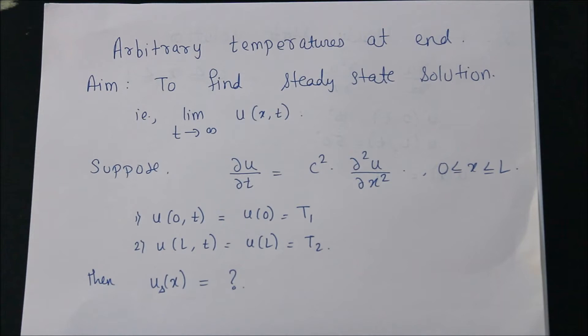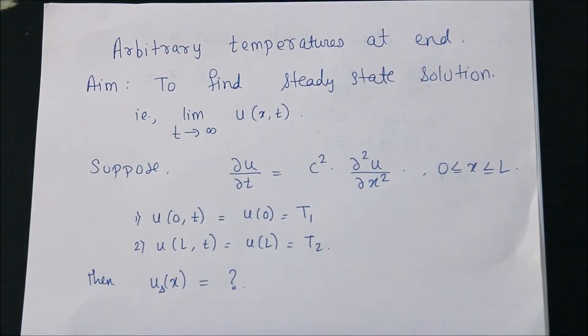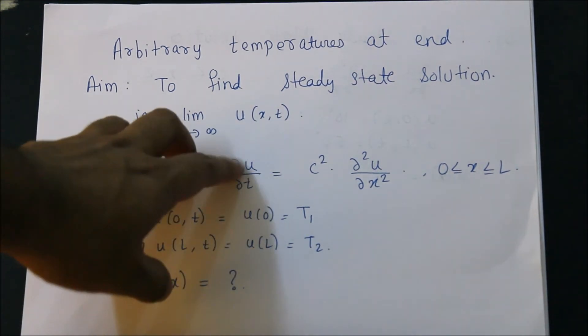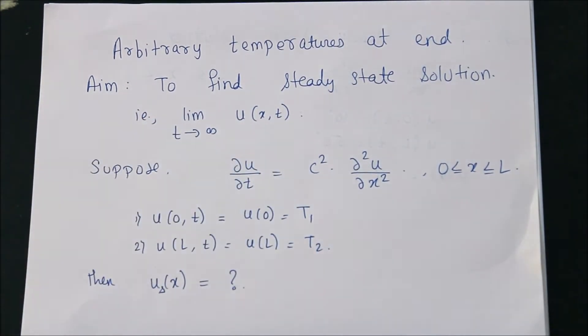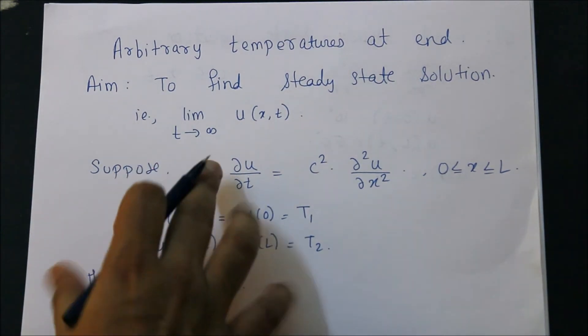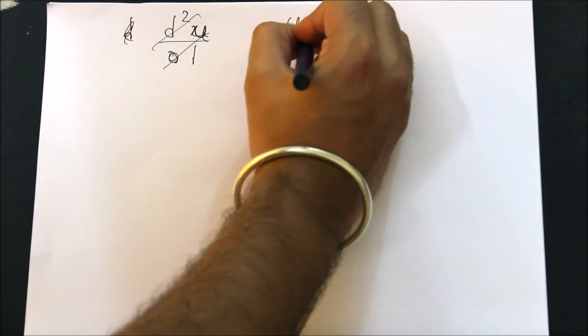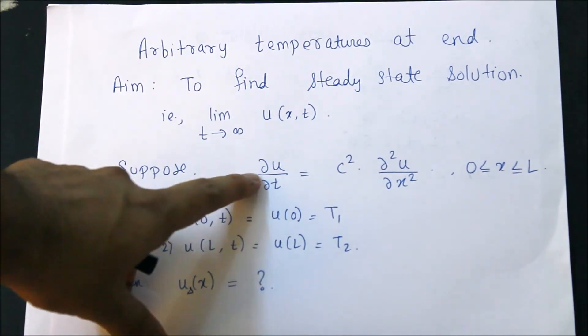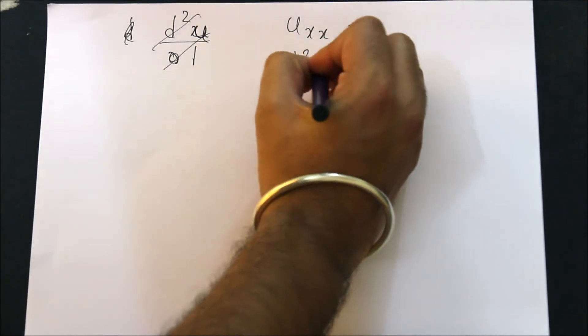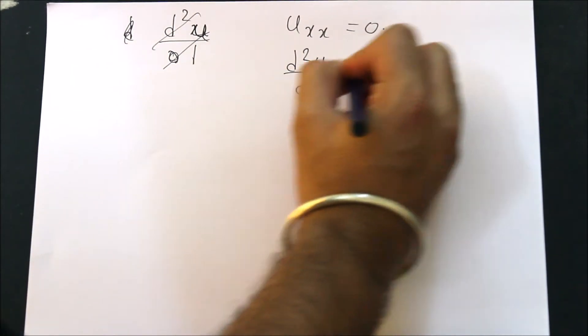I have a steady state solution—my temperature is independent of time. That means ∂U/∂t will be zero because it's not depending on time. So my ∂U/∂t is zero. If I divide by c squared, that also becomes zero. So what I have is U_XX equal to zero, or you can write D²U/DX² is zero.